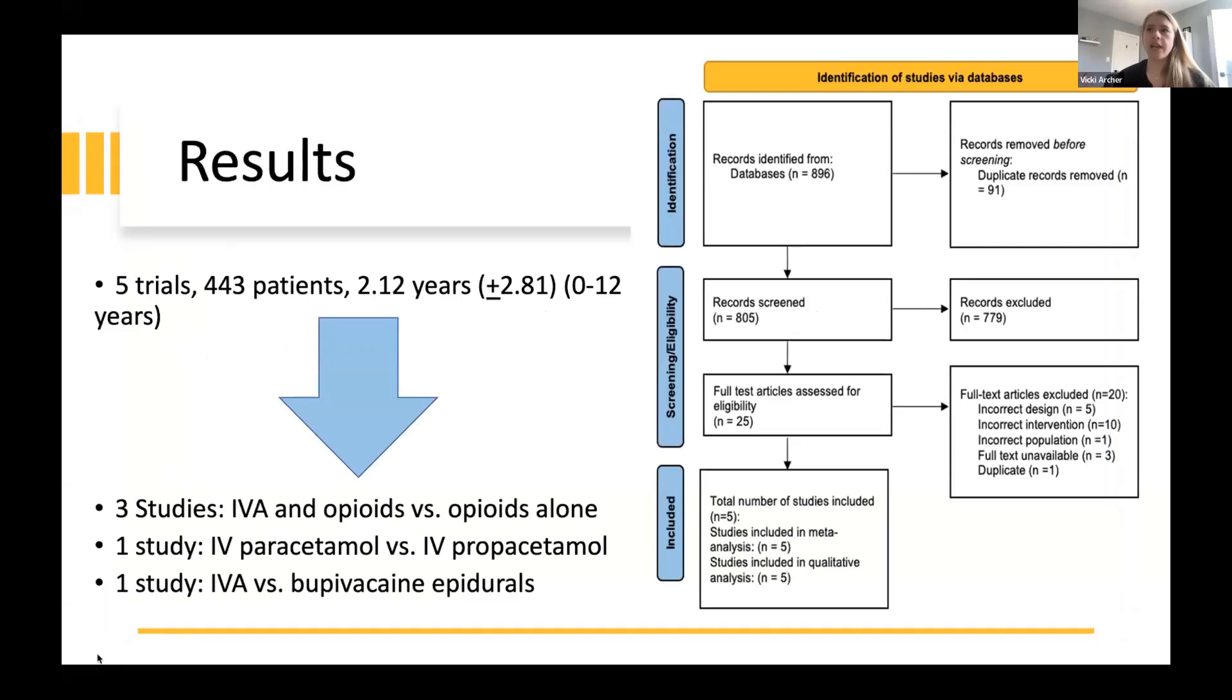We identified 896 papers, and after title and abstract, full-text screening, and removing duplicates, we were left with five randomized control trials. These trials enrolled 443 patients with an average age of 2.12 years. Trials enrolled patients aged 0 to 12 with no participants over the age of 12 and none less than 35 weeks corrected gestational age.